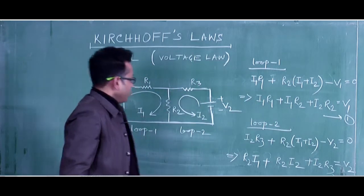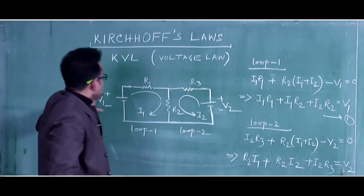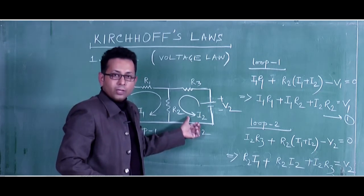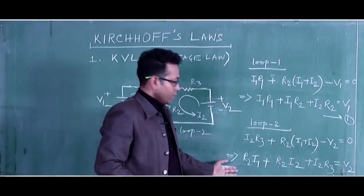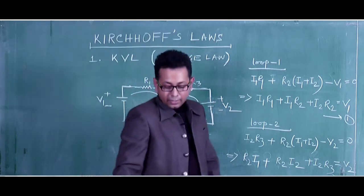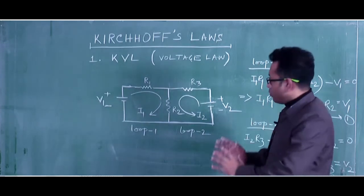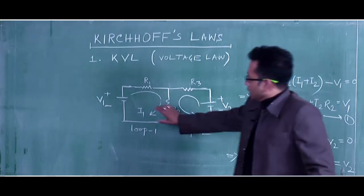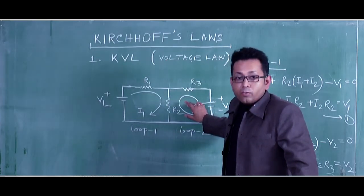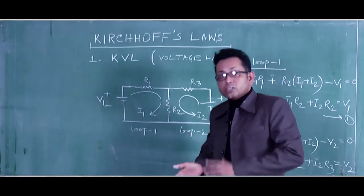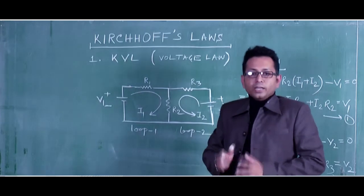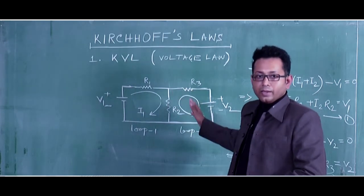From these two equations, if V1, R1, R2, R3, and V2 are all known components, we can find out I1 and I2, which are completely unknown to us. In this manner, KVL can be implemented in a particular loop or circuit where currents are unknown. By applying KVL, the unknown current parameters can be derived for given voltages — that is the application of KVL.